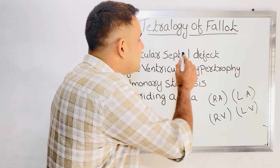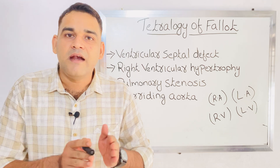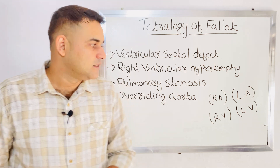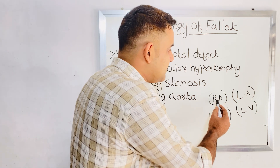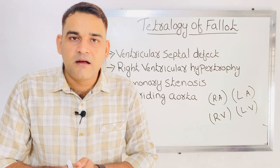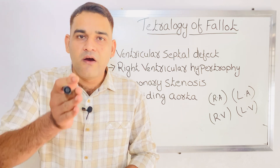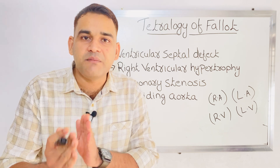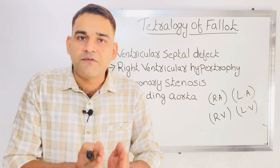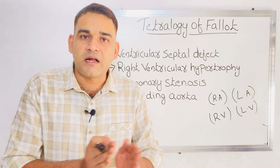The first one is ventricular septal defect. In the name itself — ventricular septal defect — the problem is with the ventricle, a defect in the septum. In the heart, we have a right atrium, left atrium, right ventricle, and left ventricle. Between the right ventricle and left ventricle, a septum is there — a partition or wall separating them. In a normal person, there is no connection between right ventricle and left ventricle because a septum is there.